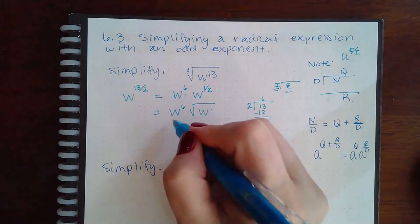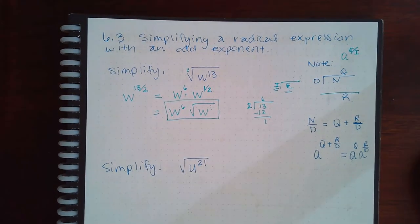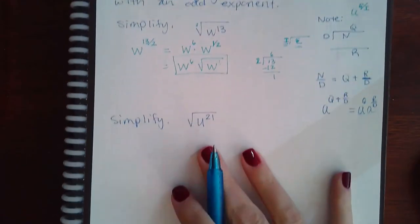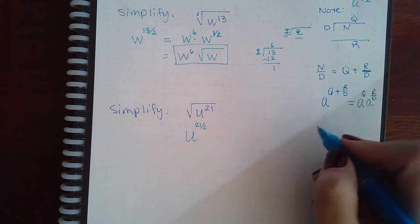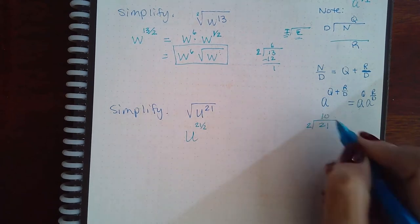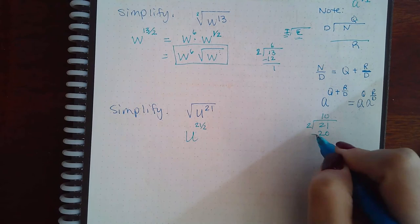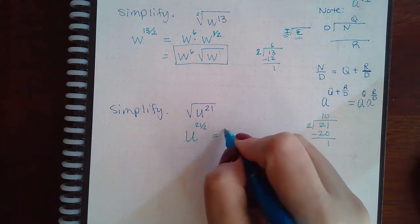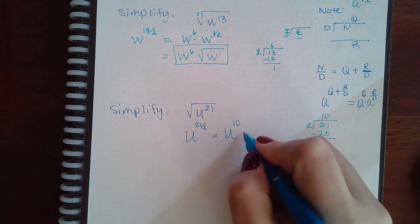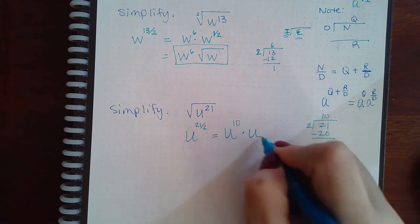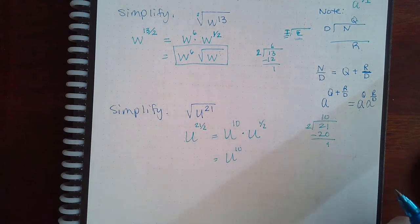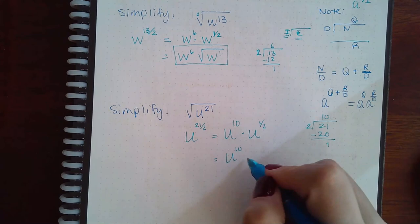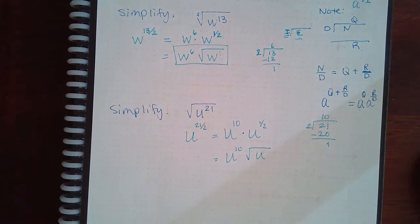Similarly, we take u to the 21 over 2. Two goes into 21 ten times, but that only gives me 20, so I have one left over. This becomes u to the 10 times u to the one over two. U to the 10th is just a regular u to the 10th. This fraction exponent has to go back into its radical form.